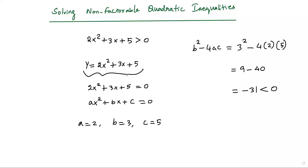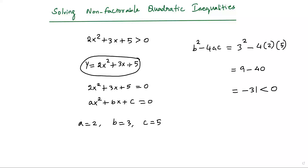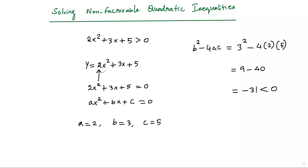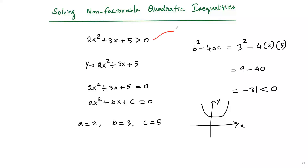Since the quadratic equation has no solution, the quadratic function has no zeros. That means the curve represented by this quadratic function will never intersect the x-axis. The curve of any quadratic function is a parabola, so this parabola will never intersect the x-axis. The leading coefficient is positive 2, so the parabola opens up. Since y = 2x² + 3x + 5, the given quadratic inequality can be written as y > 0.